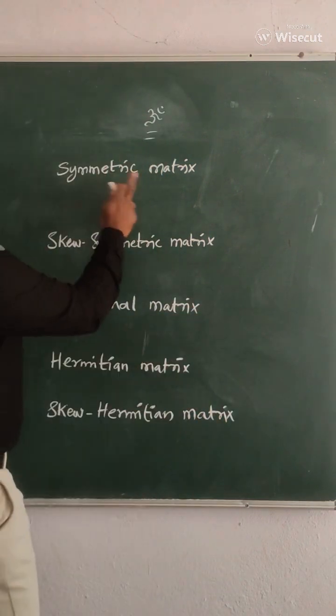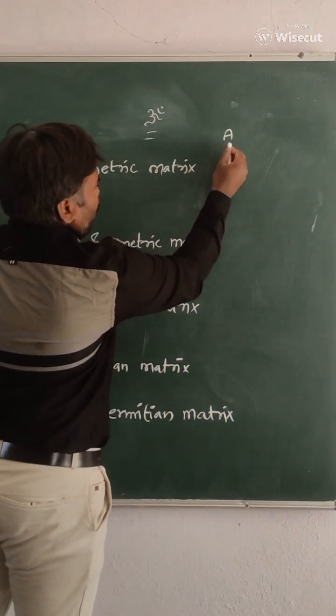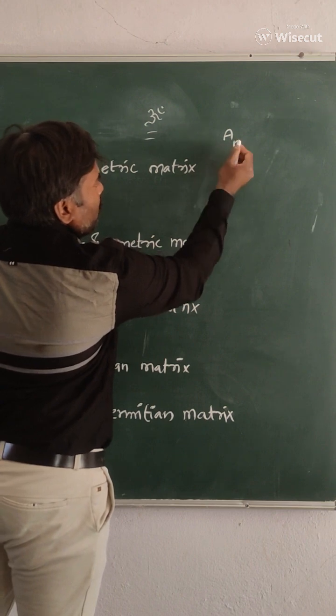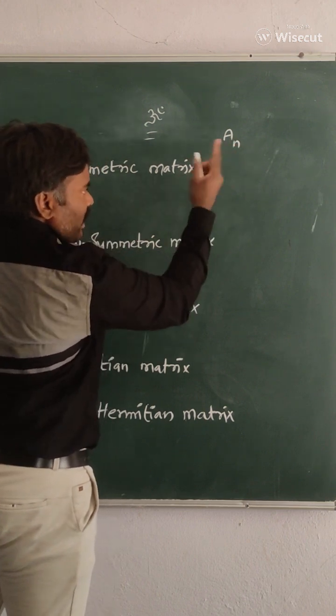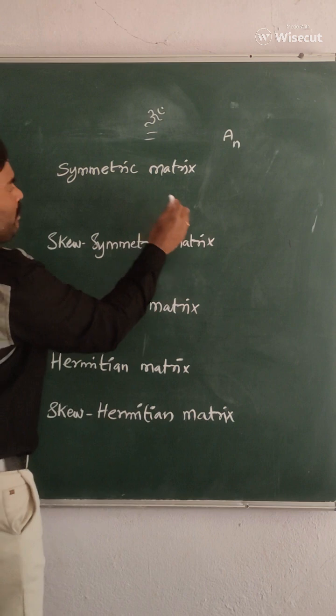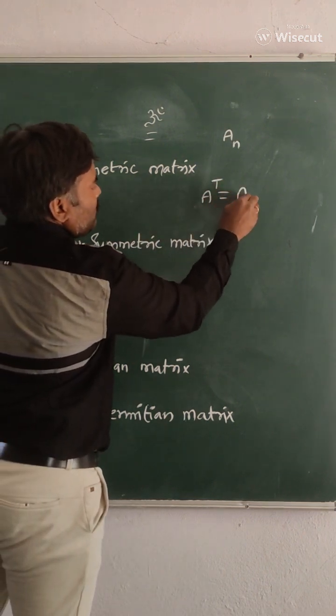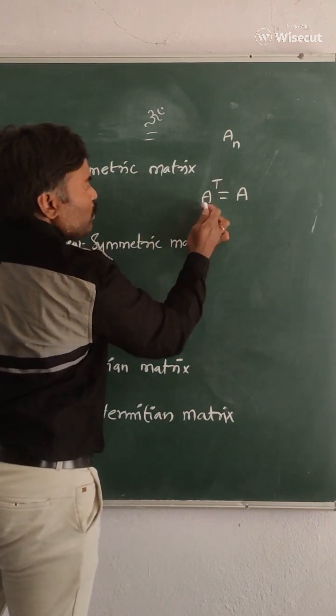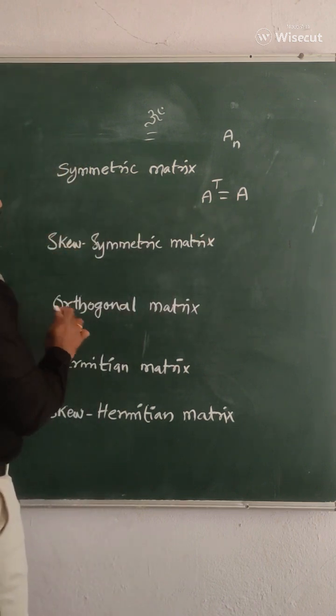For symmetric matrix, if A is a square matrix of order n, it is said to be symmetric if transpose of the matrix is equal to A. A transpose is equal to A, then you can say it is symmetric.